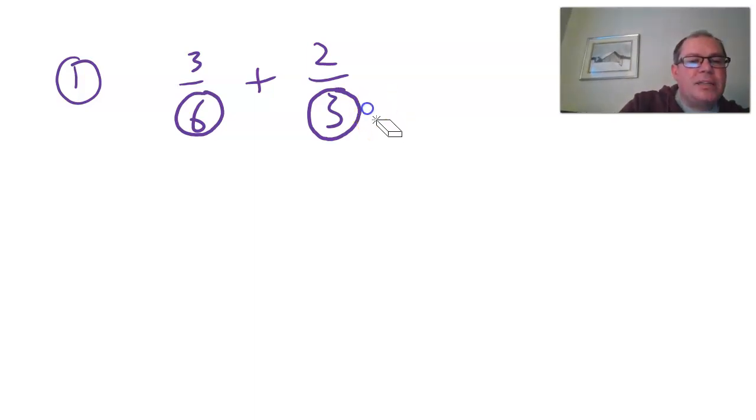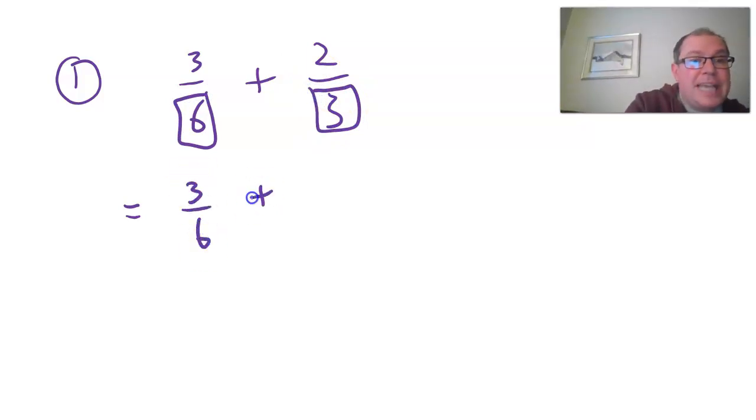So what we can do is write them using equivalent fractions so we have the same thing. So I'm sure you've guessed it. What number does six and three both go into? And six is the answer. So we can leave the first one the same. The second one I want to change into something sixths.